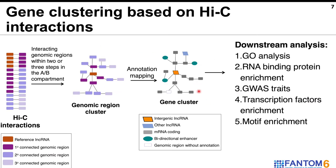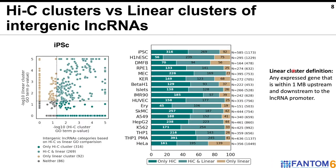Next, we generated gene clusters by selecting the genomic regions that are up to three Hi-C interactions away from the lncRNA window. These gene clusters were used for various downstream analyses. One of such analyses we performed was gene ontology analysis for each cluster.